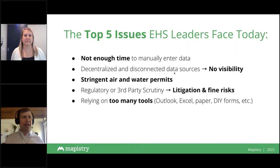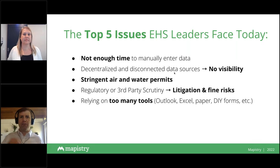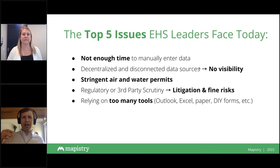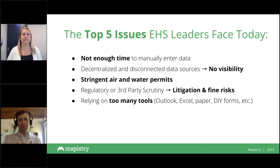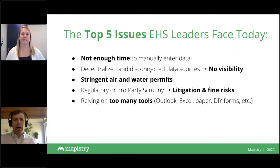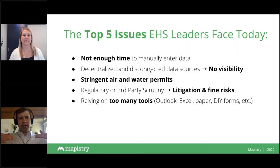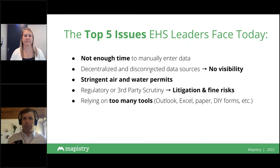Number two is data silos — just not having visibility. An area environmental manager may not have visibility to what's happening on a site until they go out there. They have to build in going to every site once a month or once a year just to collect data, rather than going to the site to work with people, problem-solve, and teach. Number three is the regulatory environment ratcheting up — air and water permits constantly getting stricter, more requirements around flow meters, pH data capture, inspection requirements, permit limits, and sampling frequency.